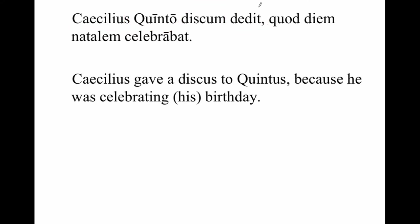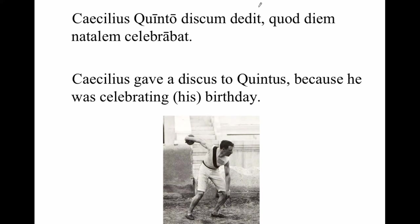Caecilius gave a discus to Quintus because he was celebrating his birthday. If you're not aware what a discus is, here's a picture of an early Olympian. The discus is usually made from some type of ceramic, and it's in the shape of a disc. The athlete will hold it, spin around, and then try to throw it as far as possible.